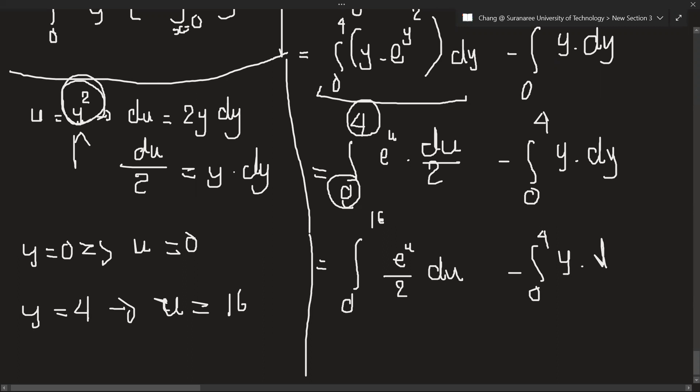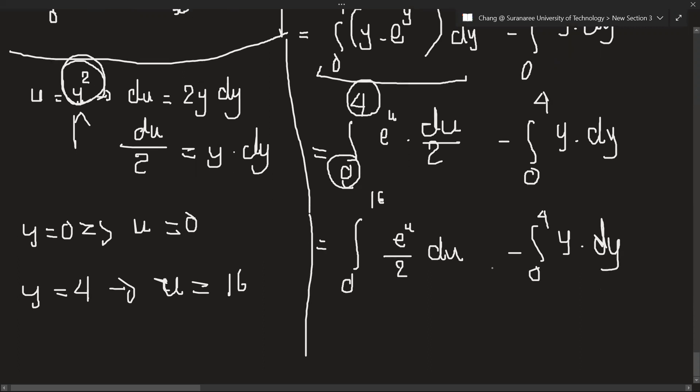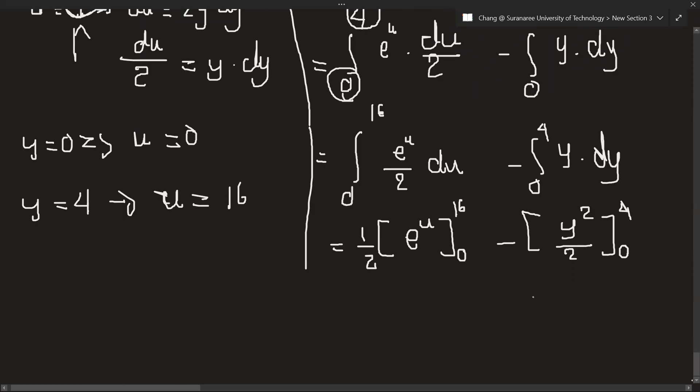So we can integrate now. When we integrate e^u, we will get e^u. We can take this 1/2 out, and the value of u is 0 to 16. Minus when we integrate y, we will get y squared over 2, from 0 to 4.